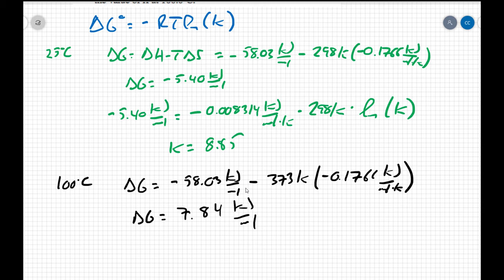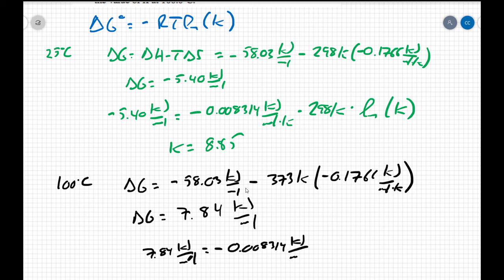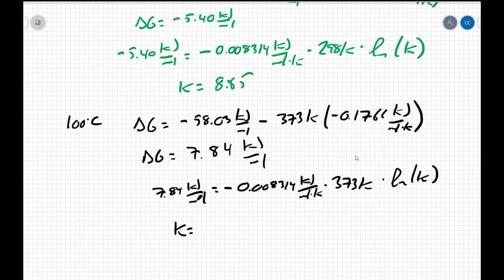Now let's find the K value at 100°C. ΔG = +7.84 kJ/mol equals the negative of R (0.008314 kJ/(mol·K)) times T (373 K) times the natural log of K. Solving gives K = 0.0798.